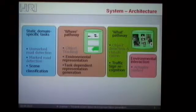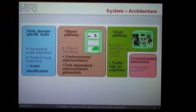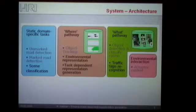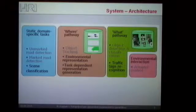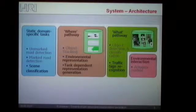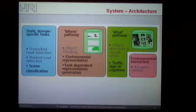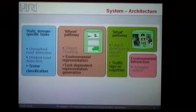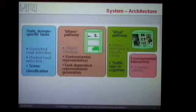I will just shortly introduce the scene classification in one of the following slides. Then we have the next large building block, which is the WHERE pathway — everything about the location of objects within our current environment. The major part here includes the generic object tracking procedure, as well as the environmental representation and the task-dependent representation generation, which are interconnected at this stage.